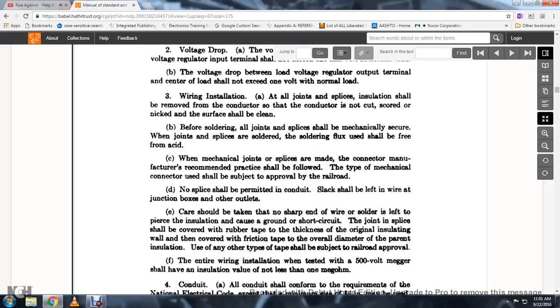When mechanical joints or splices are made, the connector manufacturer's recommendation practices shall be filed. The type of mechanical connector shall be subject to approval by the railroad. No splices shall be permitted with the continuity; slack shall be left in the wire at the junction box or outlet.